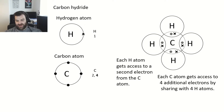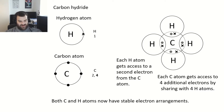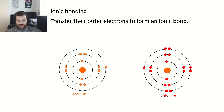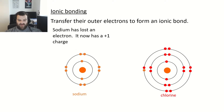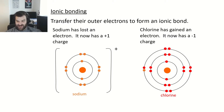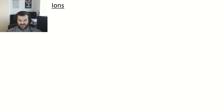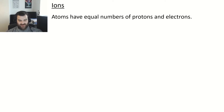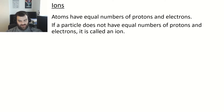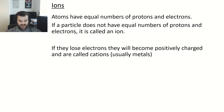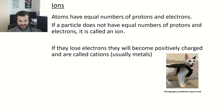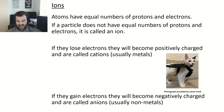In ionic bonding there is a transfer of outer electrons. Sodium transfers its outer electron to chlorine; sodium has lost an electron so it now has a one positive charge, while chlorine has gained an electron and has a one negative charge. Atoms have equal numbers of protons and electrons, but a particle without equal numbers is called an ion. Atoms that lose electrons become positively charged cations; atoms that gain electrons become negatively charged anions. Typically metals become positive and non-metals become negative.